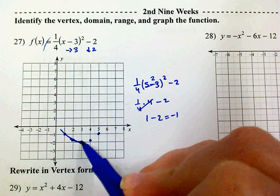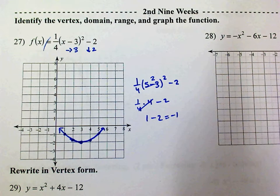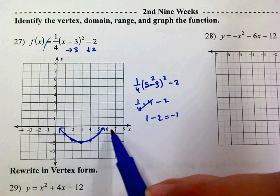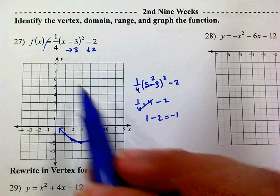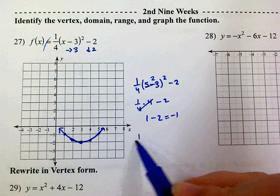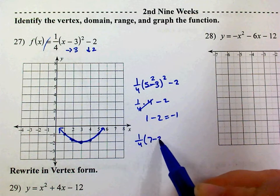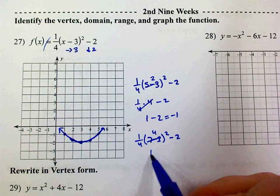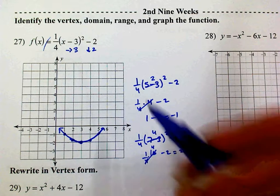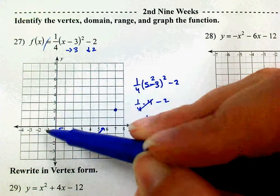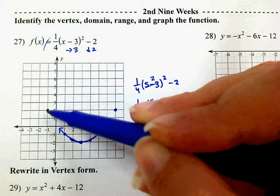Go ahead and graph your quadratic. If you wanted to go further, you might plug in x = 7 — plugging in 6 would give an odd number when dividing by 4. So at x = 7: 1/4 times (7 minus 3) squared minus 2. 7 minus 3 is 4, 4 squared is 16, times 1/4 is 4, minus 2 is 2. At x = 7, y = 2, which is in line with where the graph should be going.